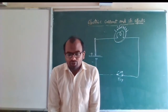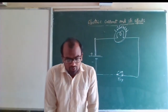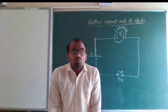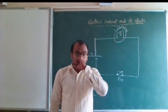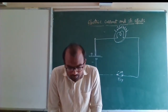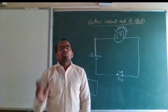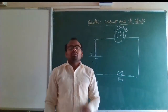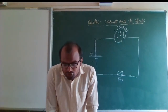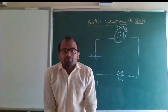In the circuit diagram, figure 14.9, inside the bulb there is a thin wire called the filament. The filament glows when an electric current passes through it.